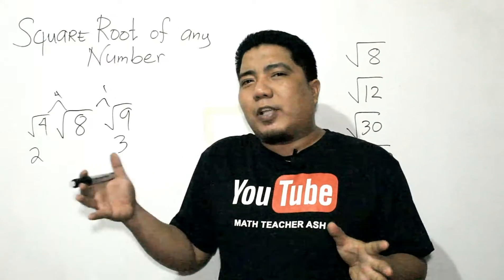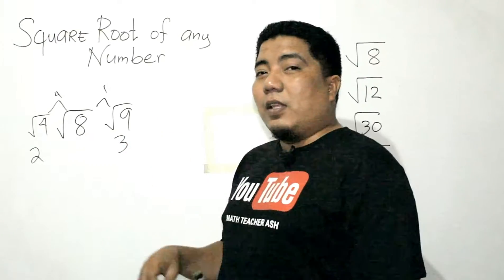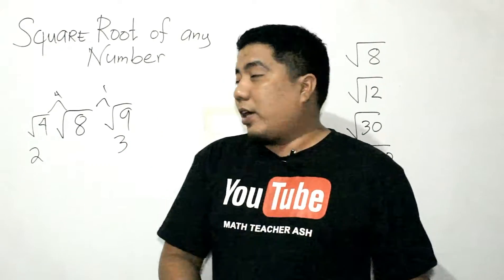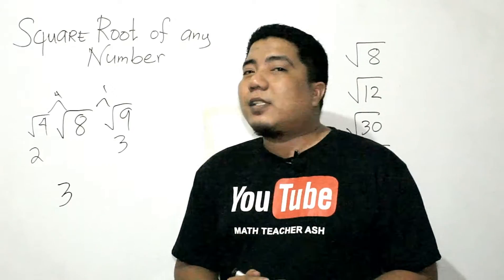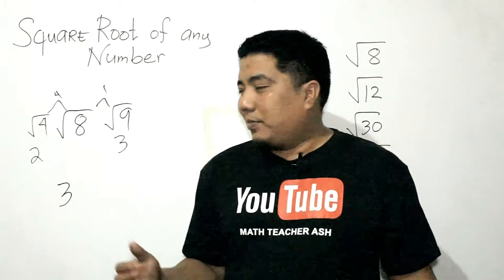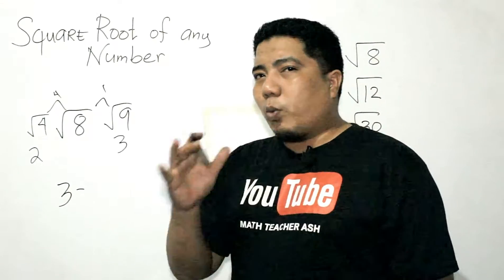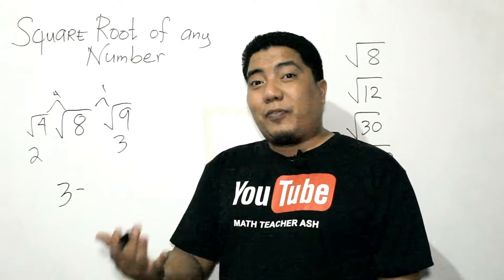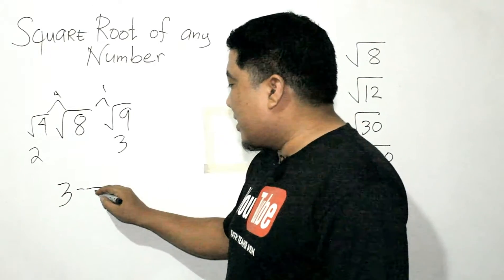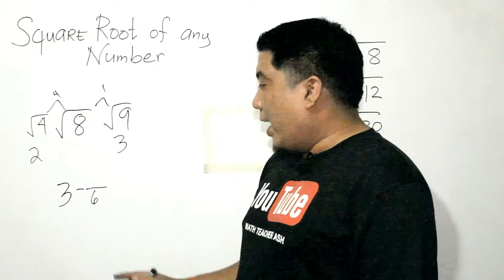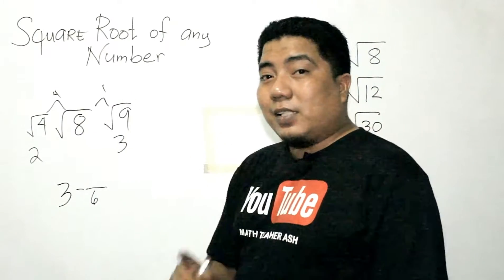The question is: to which perfect square is the square root of 8 nearer? The answer is square root of 9. Now that we have located the nearer perfect square, we will use its principal root, which is 3. This is the rule: if the principal root chosen is on the right side, you will subtract. You will subtract a fraction where the denominator is twice the principal root — that is 6 — and the numerator is the difference of those two numbers, 8 and 9, which is 1.